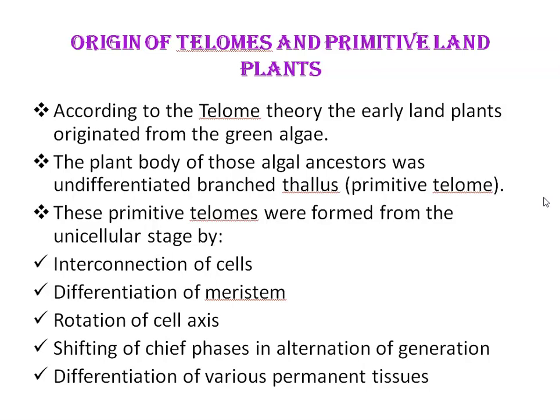The five elementary processes are: first, interconnection of cells; second, differentiation of meristem; third, rotation of cell axis; fourth, shifting of the three phases in alternation of generations; and fifth, differentiation of various permanent tissues.